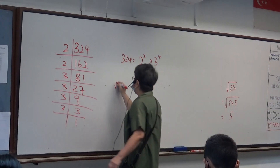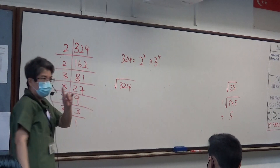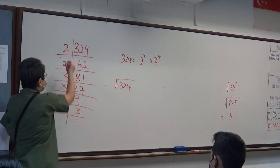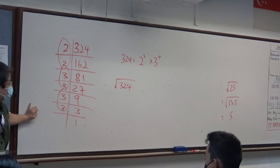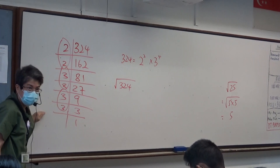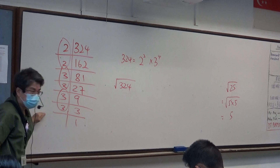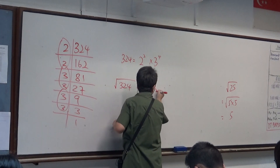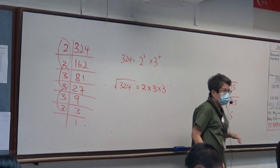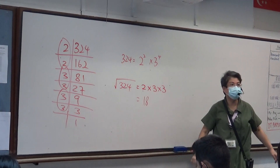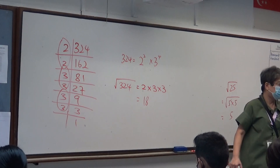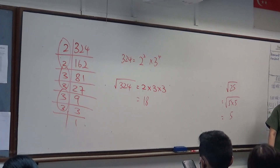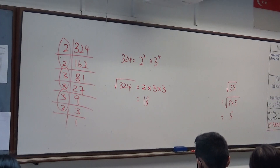Can you see that the square root of 324? I'm going to group from here and from here. That means every two same numbers, I take up one. So it's 2 times 3 times 3. That's the square root, correct? 2 times 3 times 3 — that's 18. So the square root of 324 is 18. If you have a calculator, square root of 324 — is it 18? Yes, it's 18, right? Everybody okay?